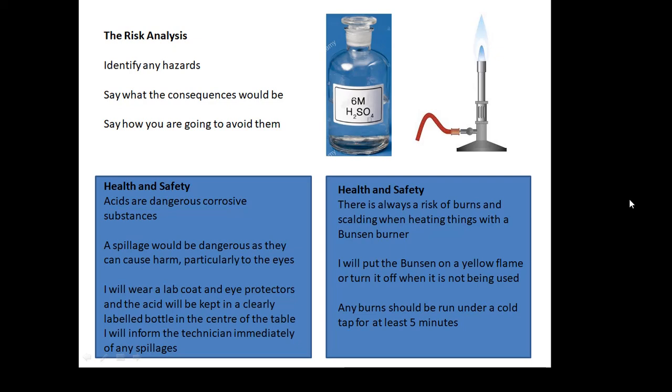You say, health and safety. Acids are dangerous, corrosive substances. A spillage would be dangerous, as they could cause harm, particularly to the eyes. So I'm going to wear a lab coat and eye protectors. The acid will be kept in a clearly labelled bottle in the centre of the table. I'll inform a technician immediately if anything is spilled. Health and safety. There's always a risk of burns and scalding when heating things with a Bunsen burner. I will put the Bunsen burner on a yellow flame, or turn it off when it's not being used. Any burns should be run under a cold tap for at least five minutes. These are risk analyses.